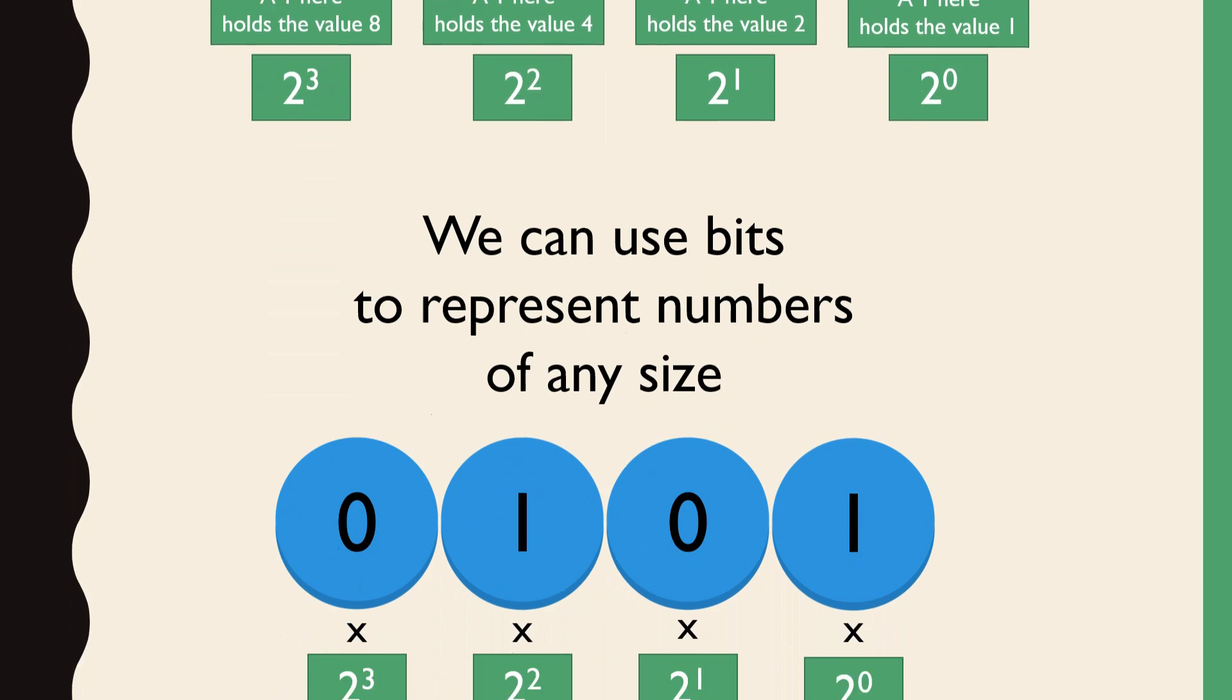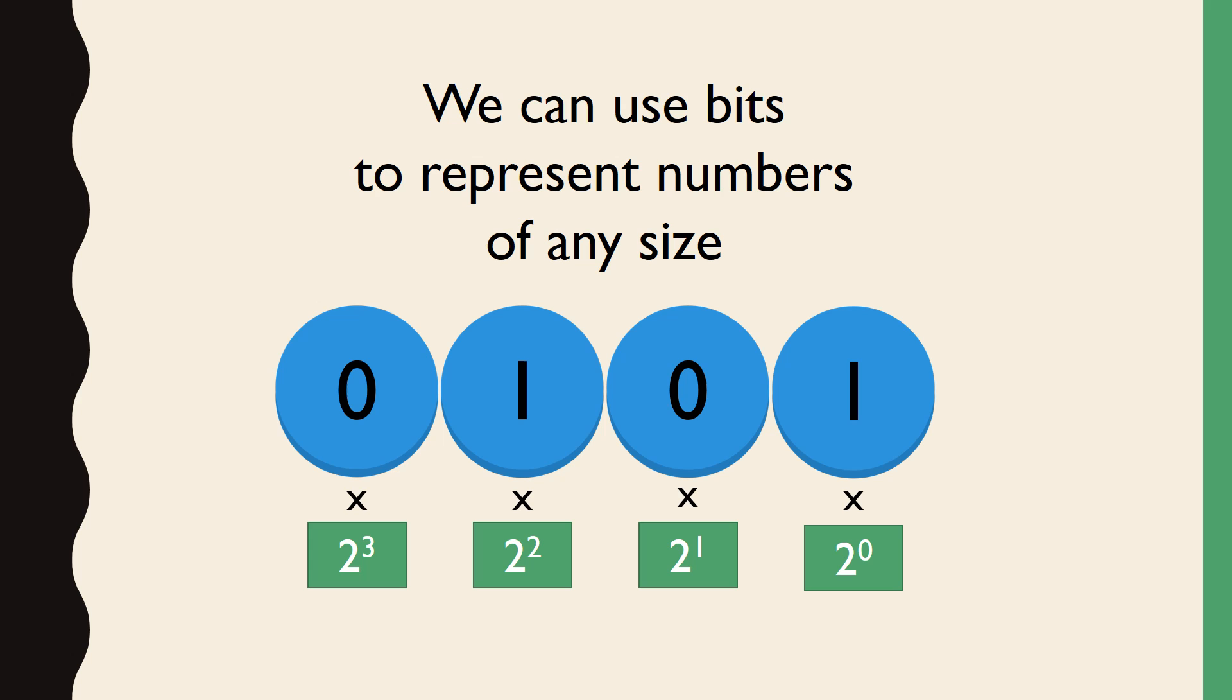The way we use these bits to represent arbitrarily large numbers is by multiplying each bit's stored value, 0 or 1, by its place value, and then adding all the results together.